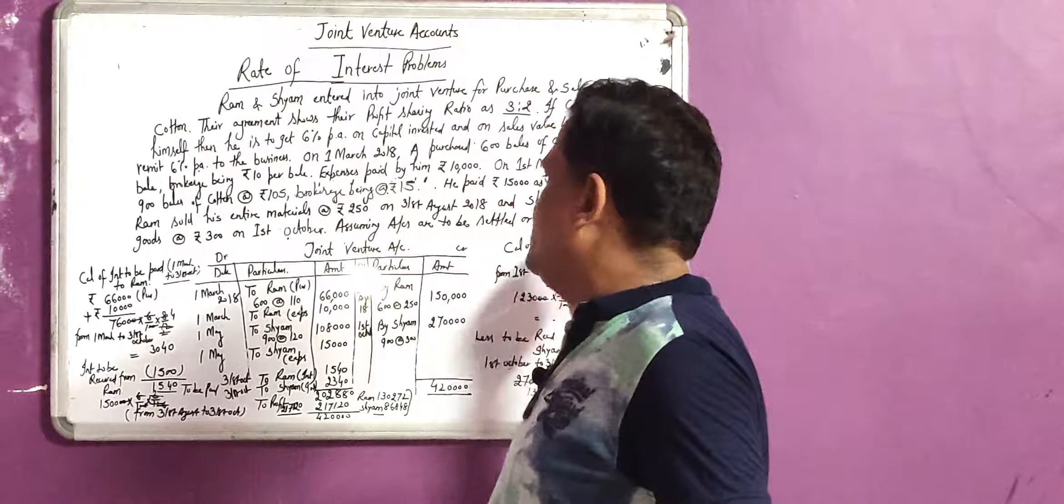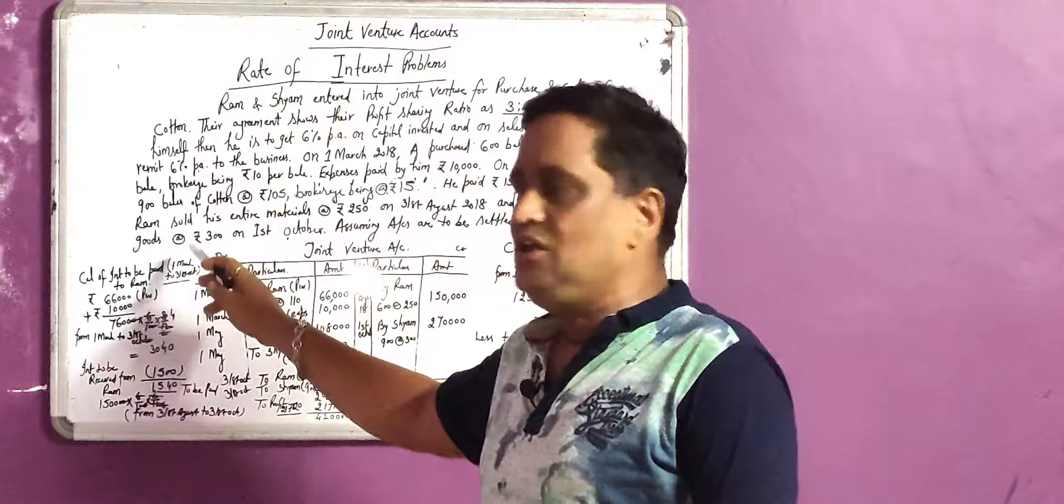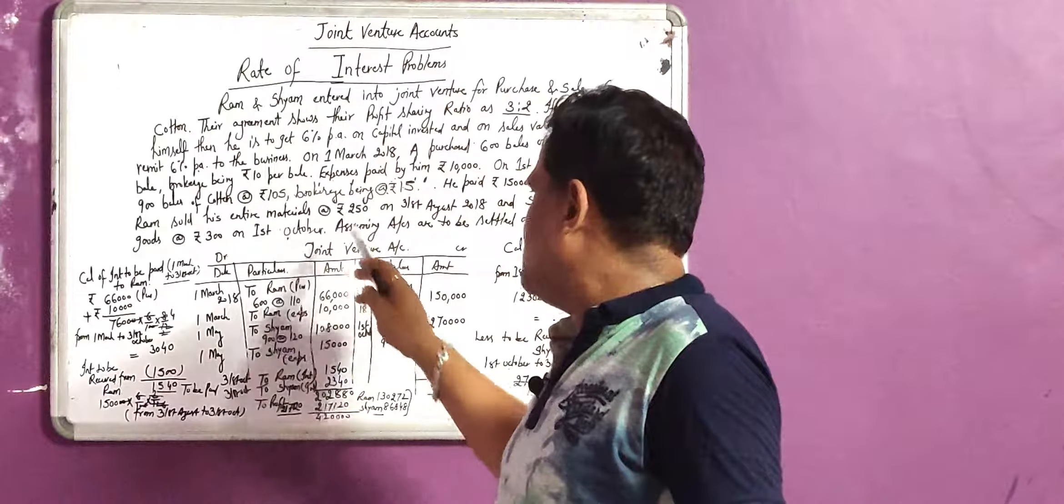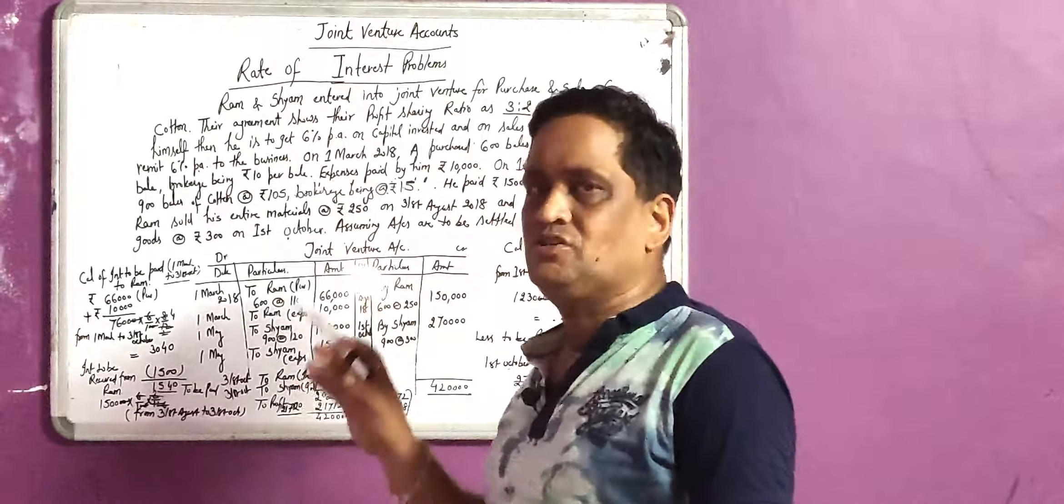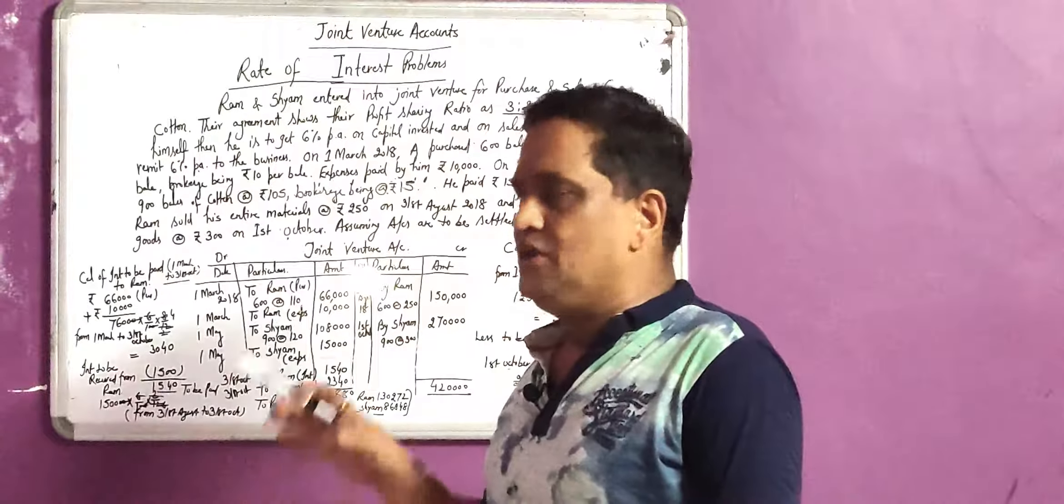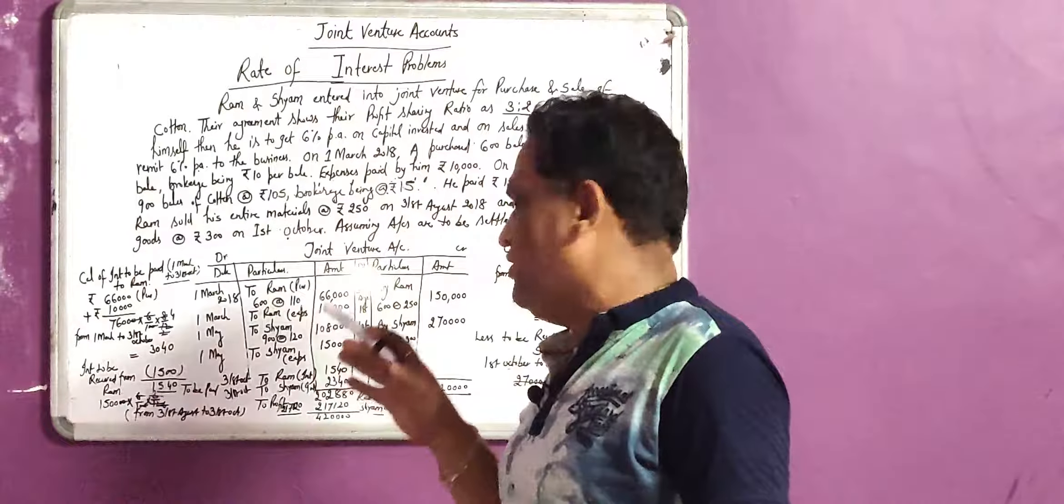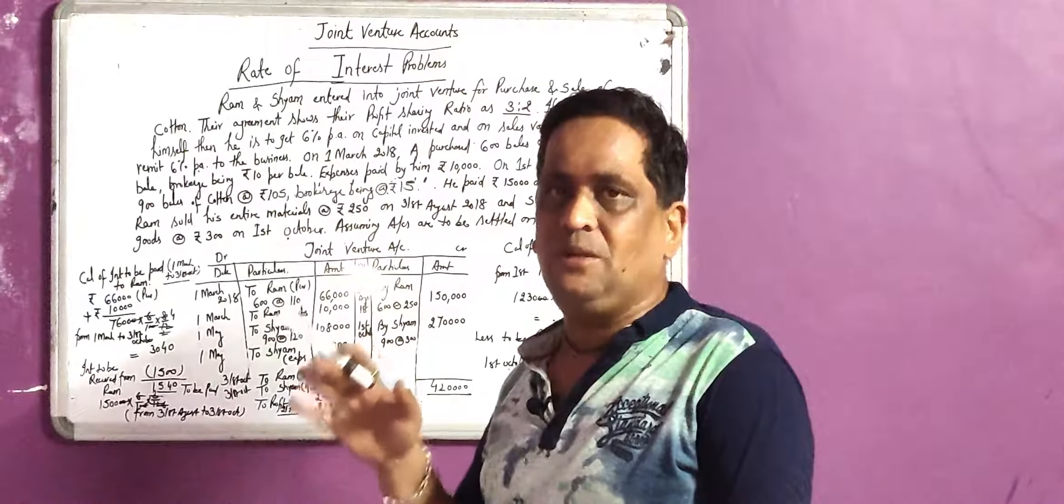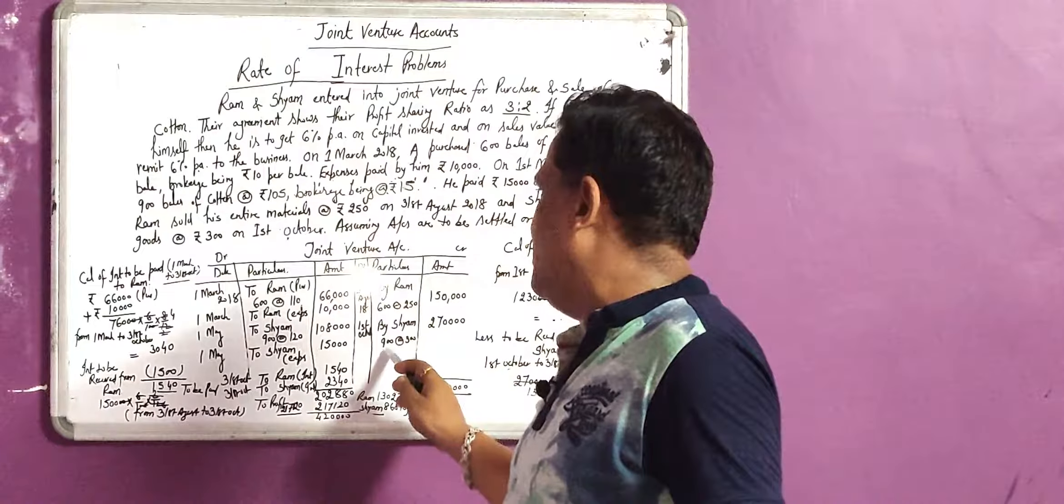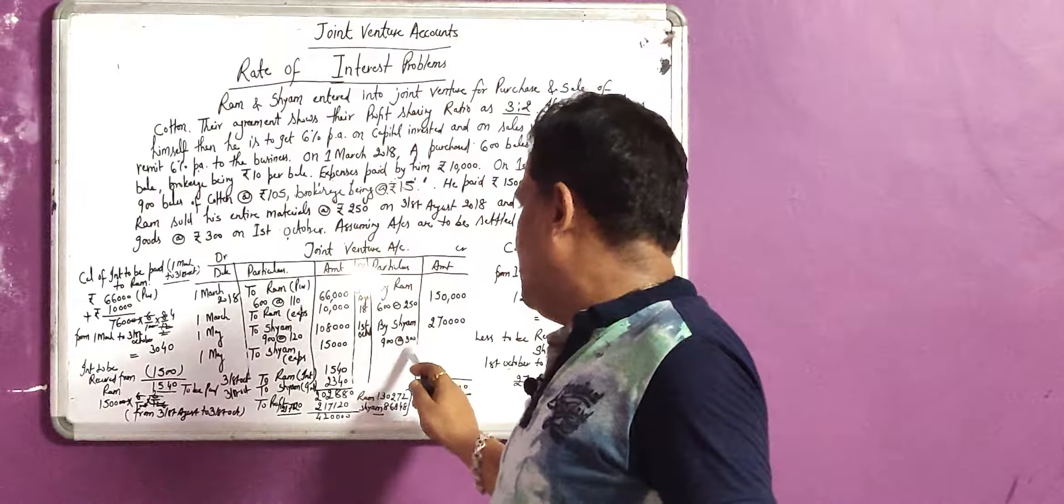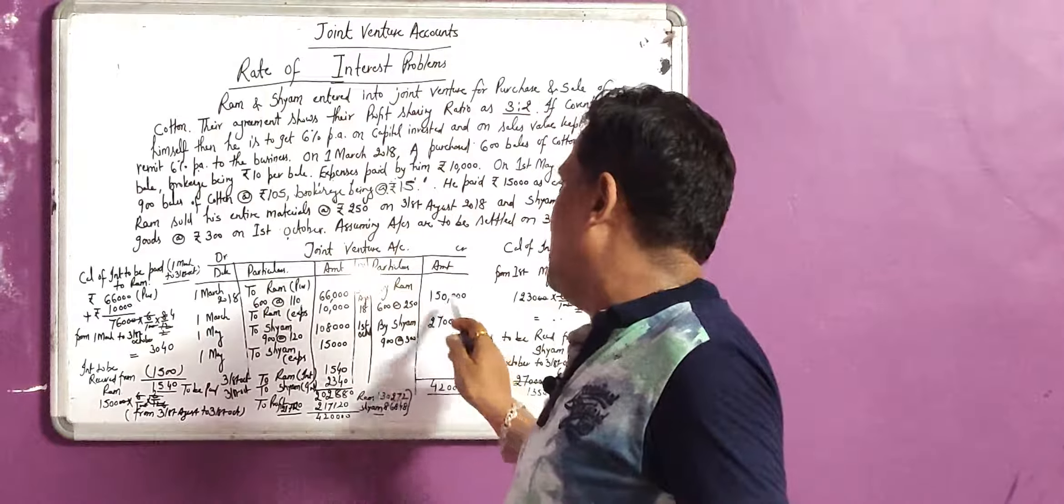Again, Shyam sold his entire goods and cotton at the rate of 300. On 1st October, the entry will be Shyam's account debited to joint venture. In case of sales, joint venture will be credited and Shyam's account will be debited because Shyam is keeping money of sale price. This will be 900 at the rate of 300 per bale, that will be 270,000.